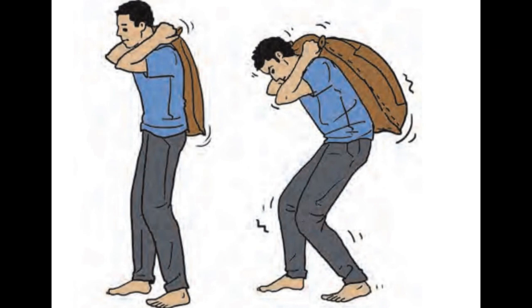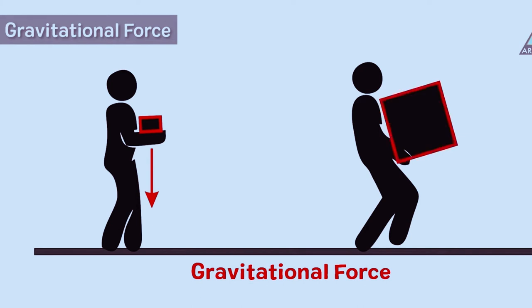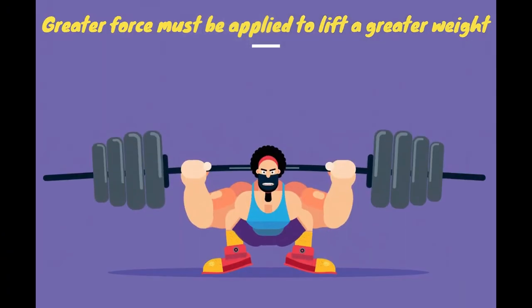The actions of lifting a sack are shown in the picture. One sack looks empty, the other one is full. What difference do you notice in the way the two sacks are lifted? The gravitational force on the empty sack is less. That is to say, it weighs less. The gravitational force on the bigger sack is greater. In other words, the bag weighs more. Greater force must be applied to lift a greater weight.